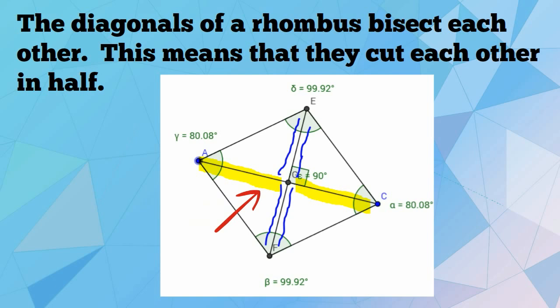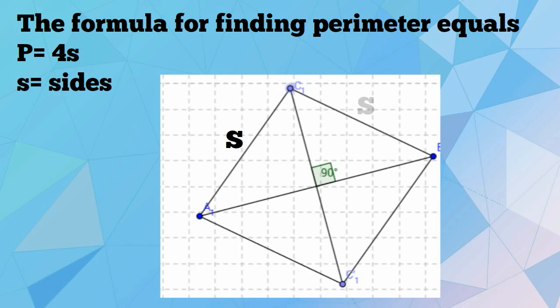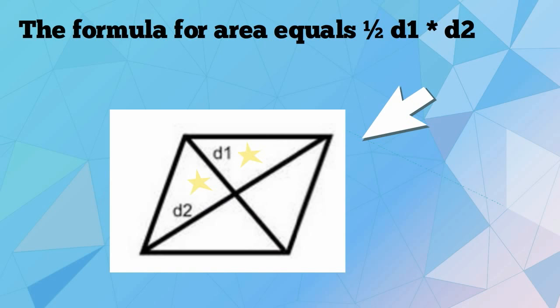The formula for finding the perimeter of a rhombus: P equals 4S, where S equals sides. The formula for area equals one half times diameter 1 times diameter 2. A rhombus has all the properties of a parallelogram.